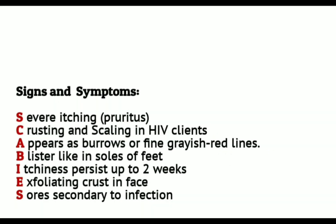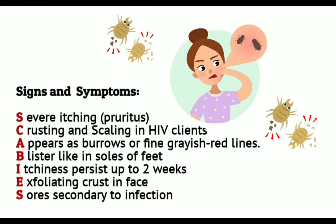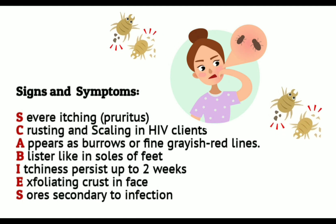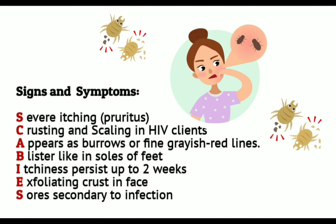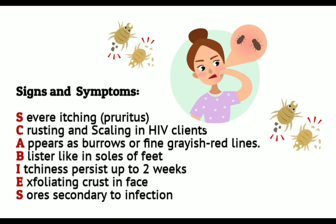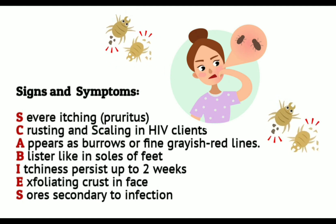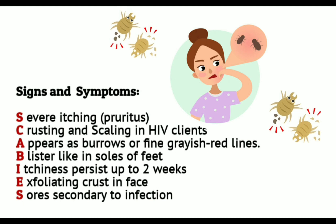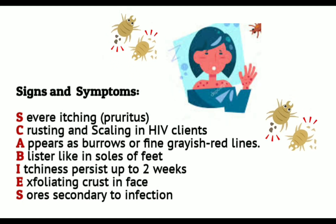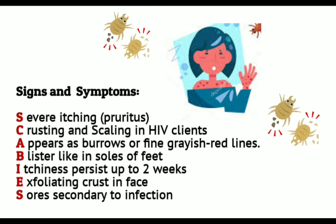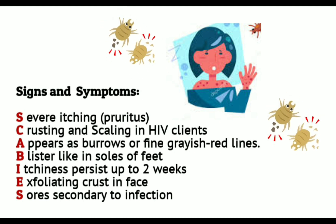What are the signs and symptoms of scabies? We have the SCABIES mnemonics. For letter S — severe itching or pruritus. The most common signs and symptoms are intense itching or pruritus, especially occurring at night, and a pimple-like papular itchy rash. The most earliest sign of scabies is pruritus or severe itchiness, and the presence of a pimple-like papular itchy rash — that is the scabies rash.